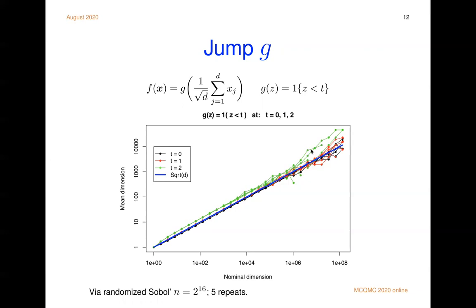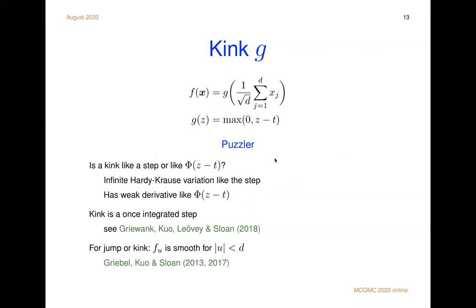Now let's look at that kink. So again, we take the sum of the x's divided by the square root of d, and we pass it through this rectified linear unit function or a positive part, the max of 0 and z minus t. Well what should happen? Should it look like the step or should it look like the smooth function?